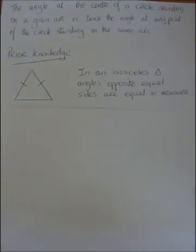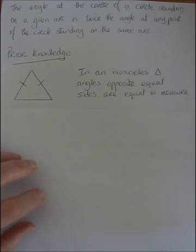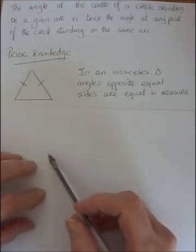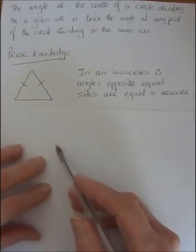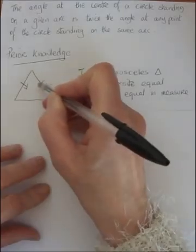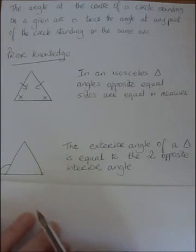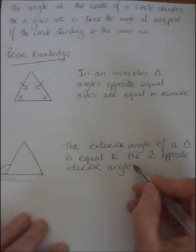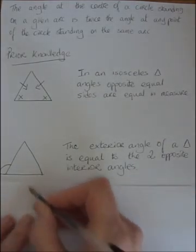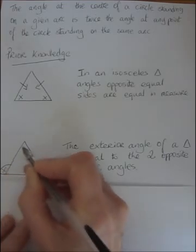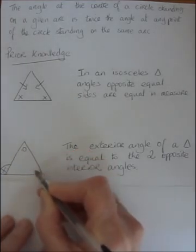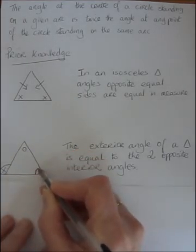Before we begin this theorem let's do a little bit of revision. In an isosceles triangle — that's a triangle with two equal sides — angles opposite equal sides are equal in measure. The exterior angle of a triangle is equal to the sum of the two opposite interior angles.